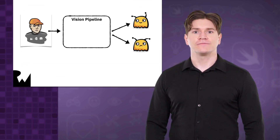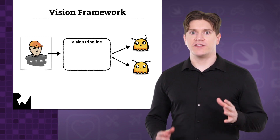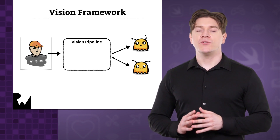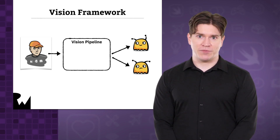Along with Core ML, Apple also introduced the Vision Framework in iOS 11. As you might guess from its name, Vision is designed to help with computer vision tasks. For example, it can detect rectangular shapes and text in images, and it can detect faces and even track moving objects. Most importantly for you, Vision makes it easy to run Core ML models that take images as input. You can even combine this with other vision tasks into an efficient image processing pipeline.